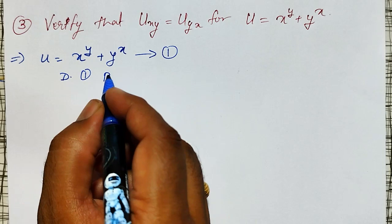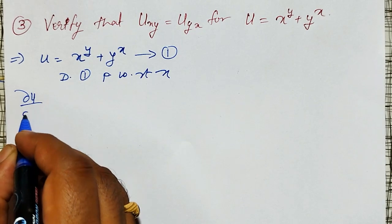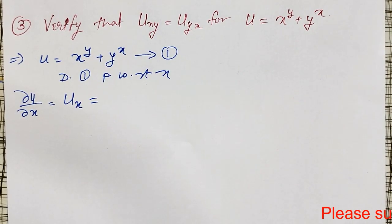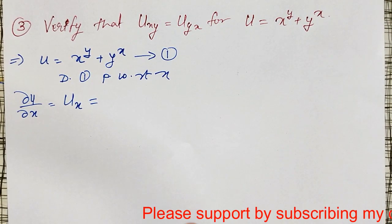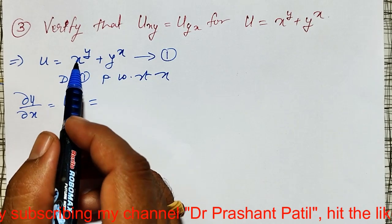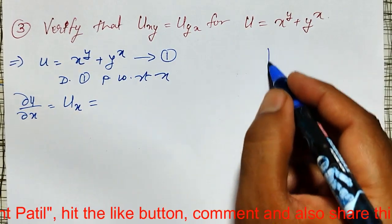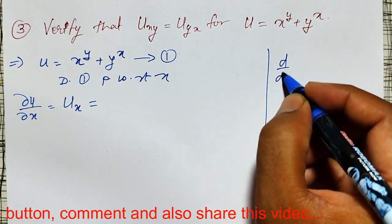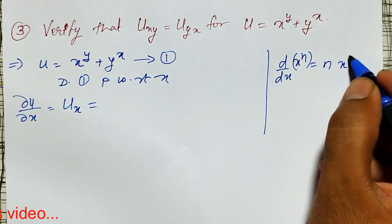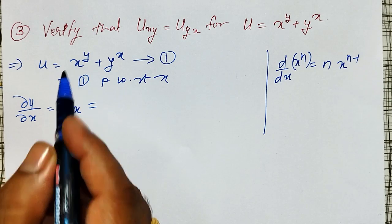Differentiating equation one partially with respect to x. The usual notation is ∂u/∂x, or short notation is u_x. While differentiating partially with respect to x, y is treated as constant. There are two terms, so I will use the sum rule. For x raised to y, since y is constant, I will use the formula d/dx of x raised to n equals n times x raised to n minus 1.